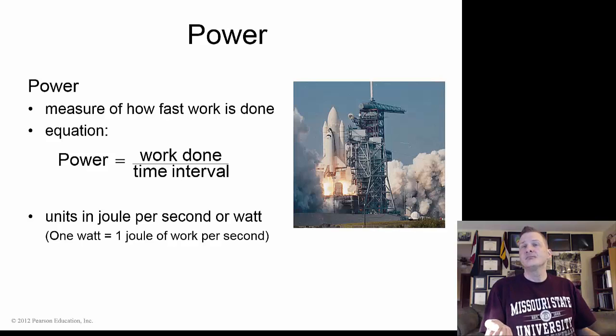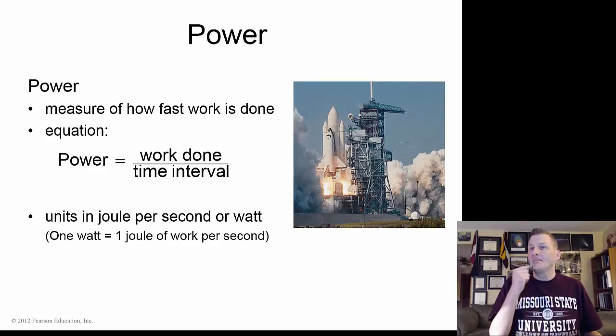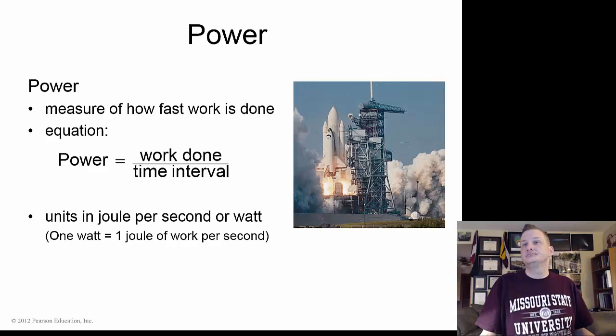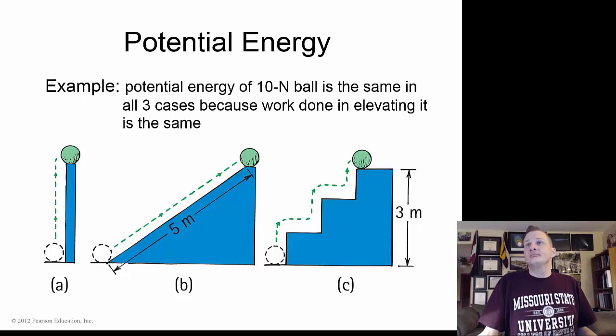Now look at power. Power is a measure of how fast work is done. The equation is the amount of work done divided by the time it takes you to do it. We call this unit of power a watt, and you are very familiar with this in the electric system. When you get your electric bill in the mail they talk about how many watts or kilowatts per hour you use.